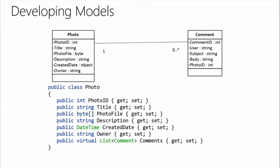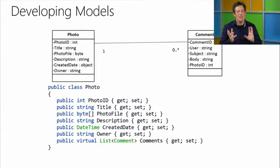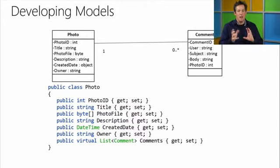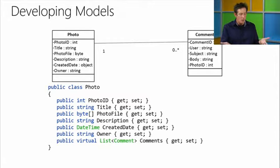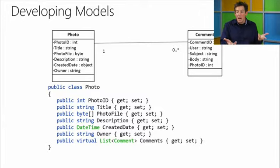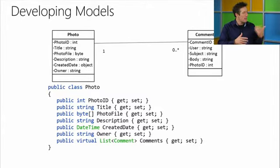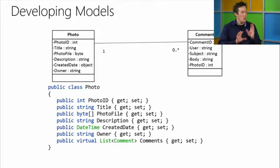That's exactly the point - all a model is is just simply a class. One of the big things with MVC that I always like to say is don't overthink it. This is just a very basic photo class. It's got an ID, a title, a byte array to store the actual photo, a date time, and a list of comments. At the end of the day, it's just simply a class.